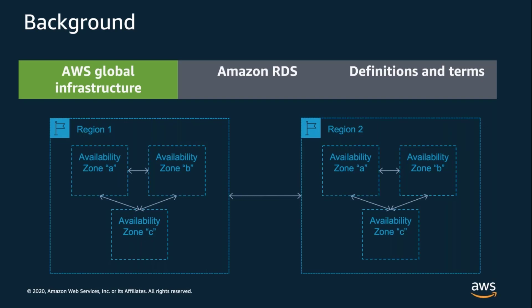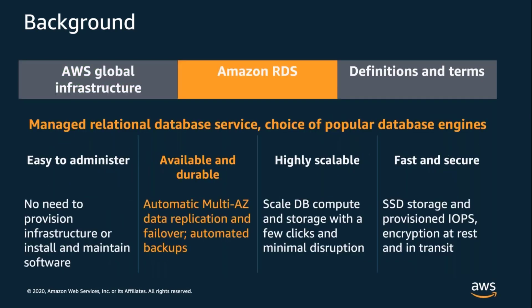Which region you use is an important decision — typically you want to choose the region closest to your customers to ensure lowest latency, or choose based on geographic location when data locality and sovereignty are important. Which availability zone you use is not important; AZs within a region should generally be treated as interchangeable, and your application servers should spread across as many as possible to ensure the highest overall availability.